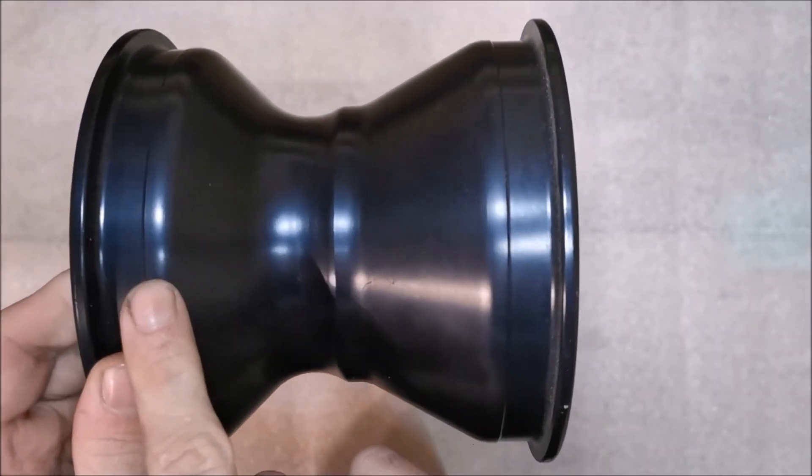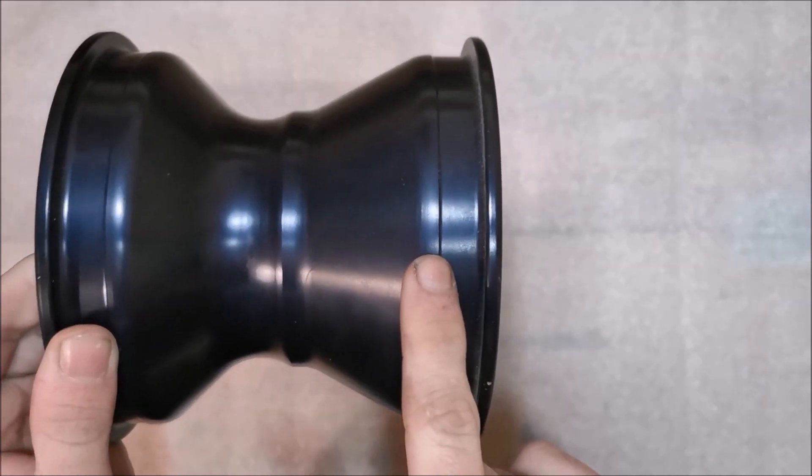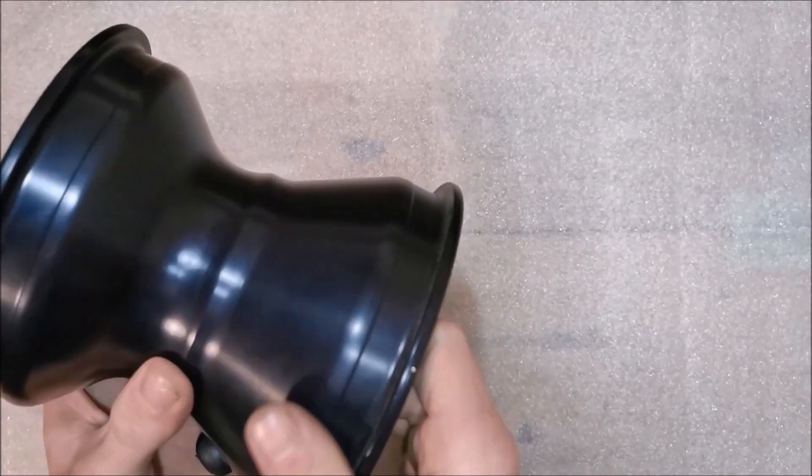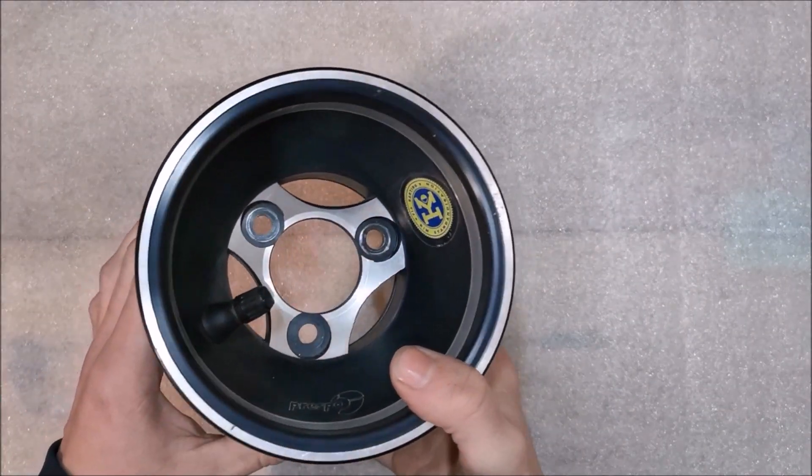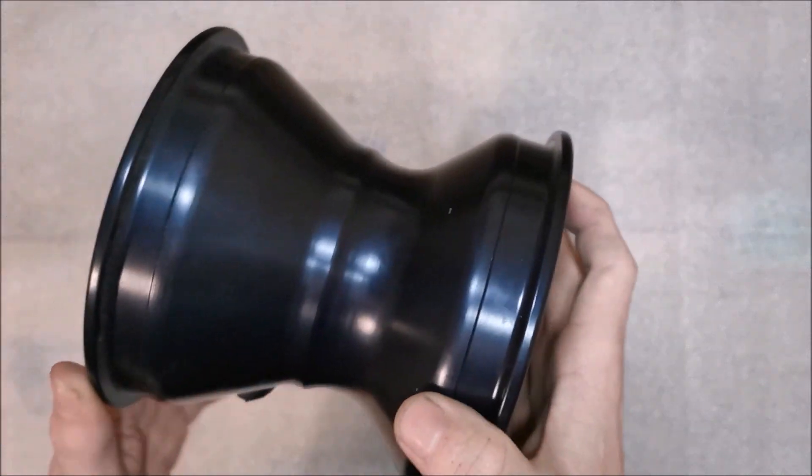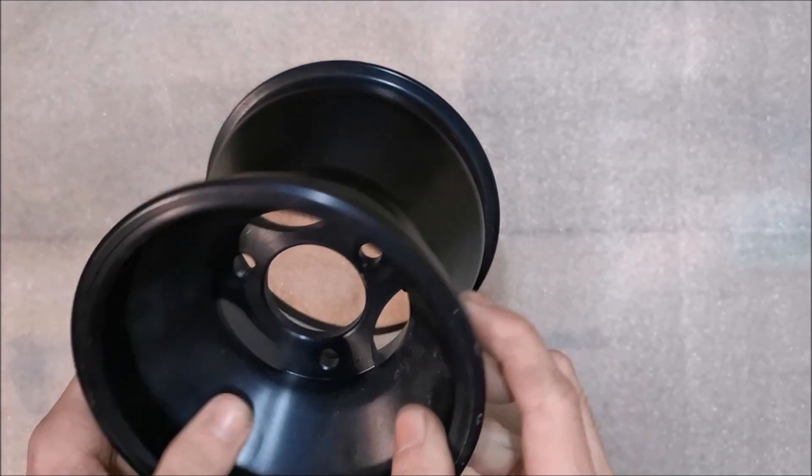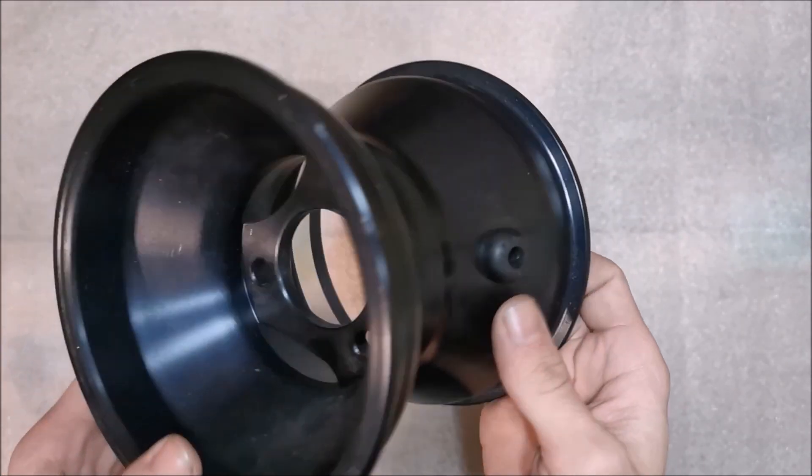This will be later on machined on a lathe. And yes this is basically the rim. So now you know basically how the wheel should look like in the end or a little bit different.